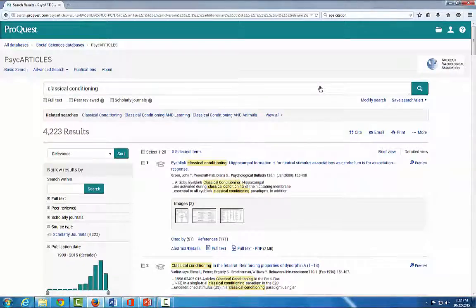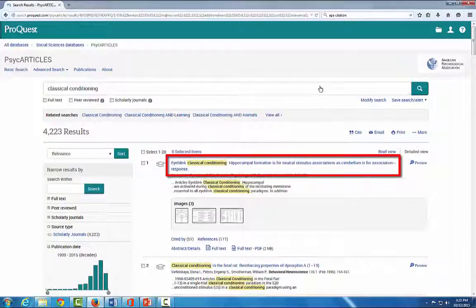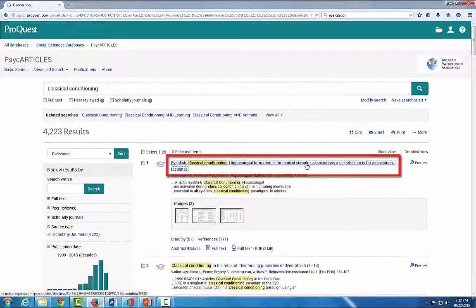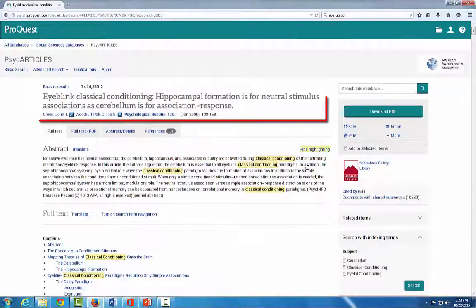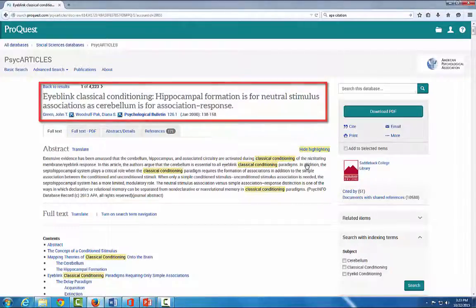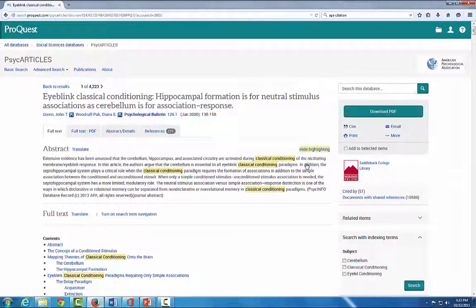After completing a search in the PsychArticles database, click on the title of an article to find out more information about it. Most of the required citation information is here at the top of the page. However, APA formatting requires that the information be placed in a very specific order and format. This database has a shortcut to help you with your citations.